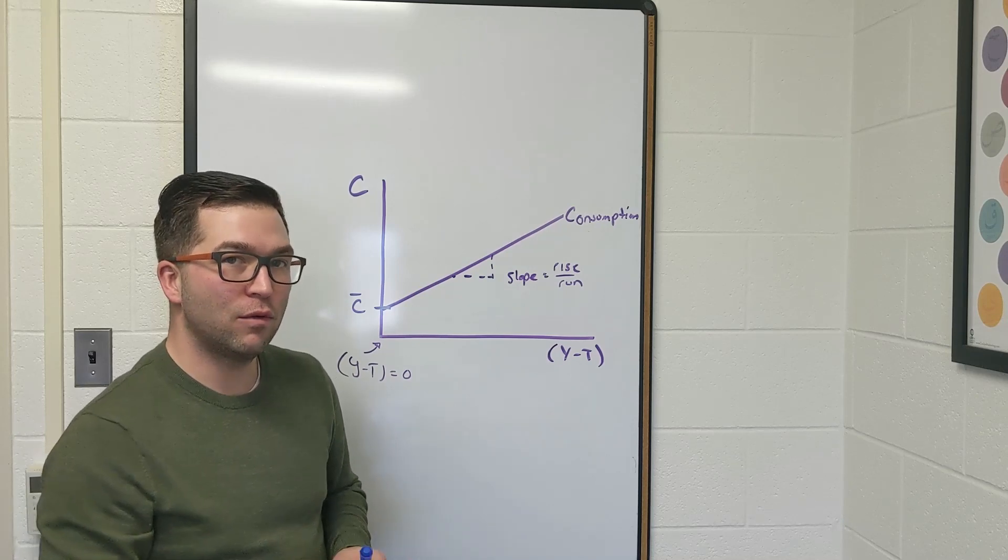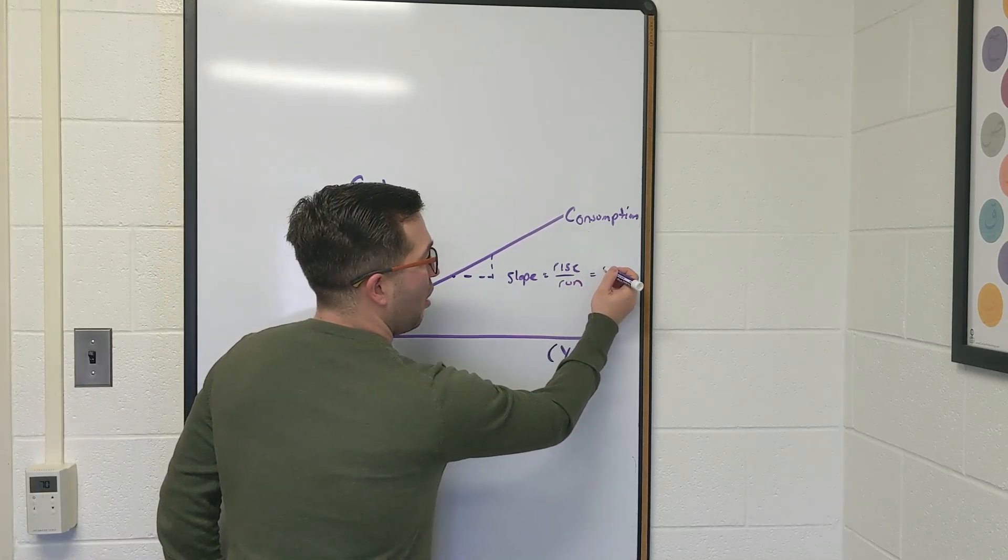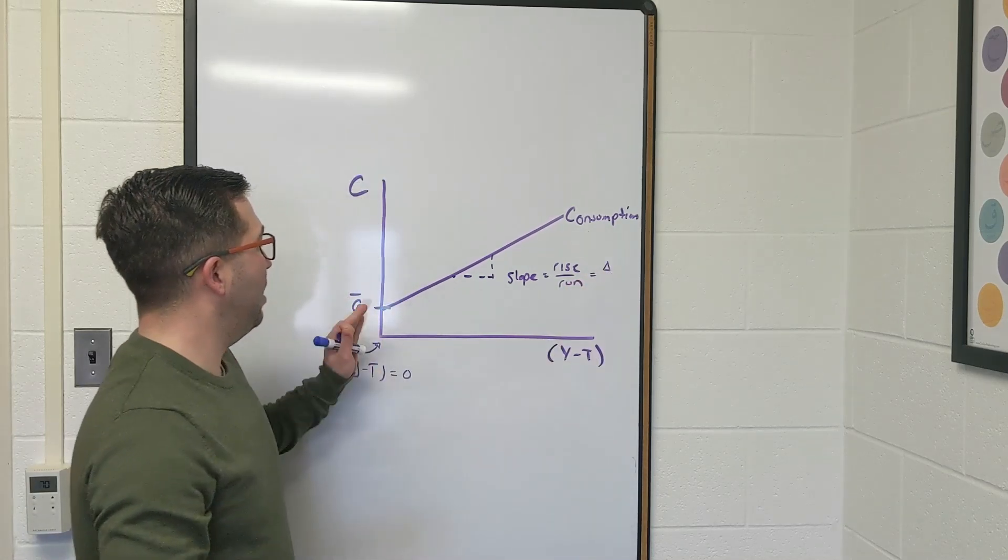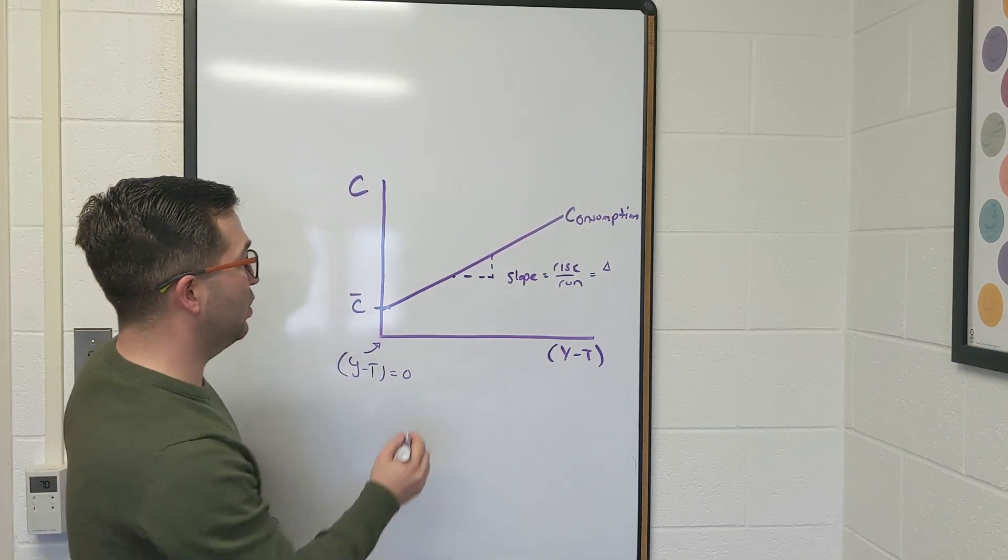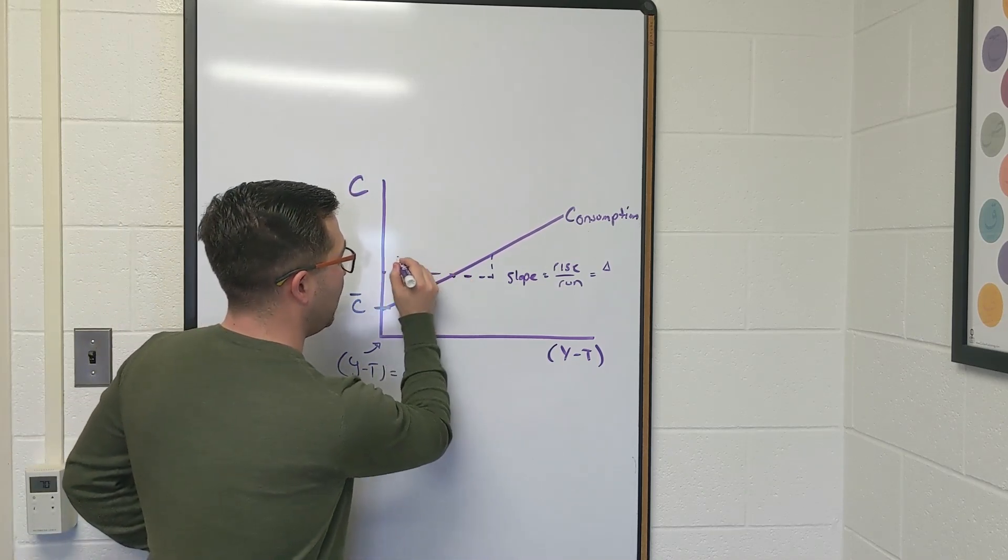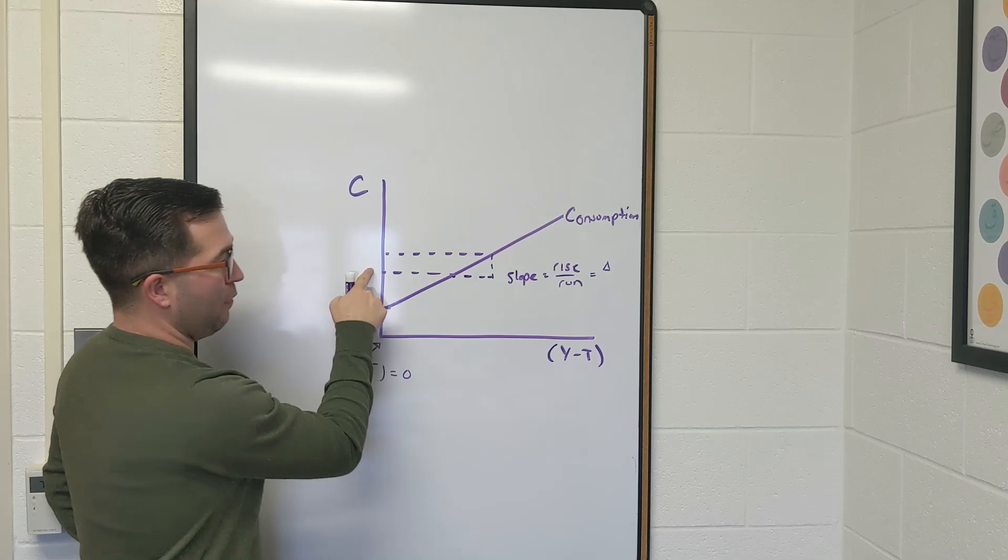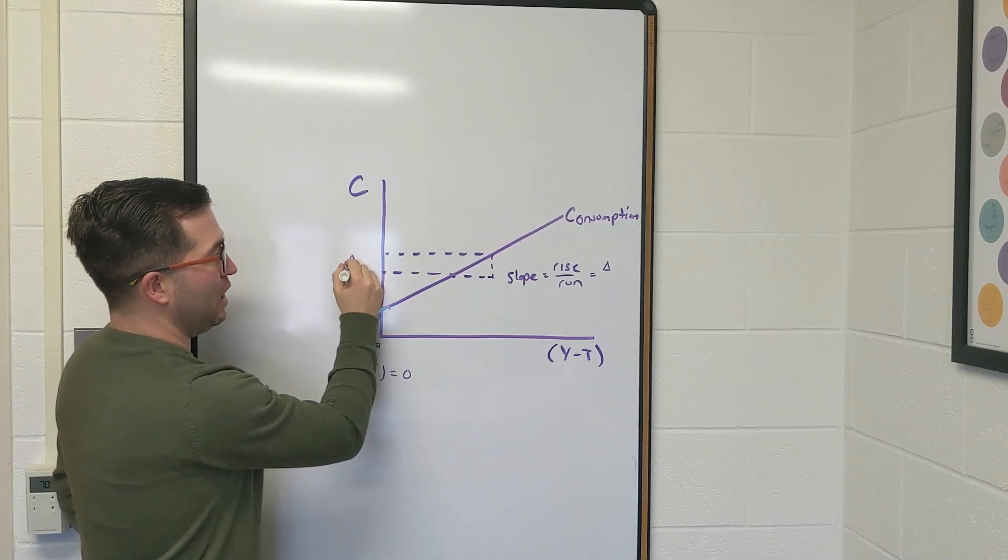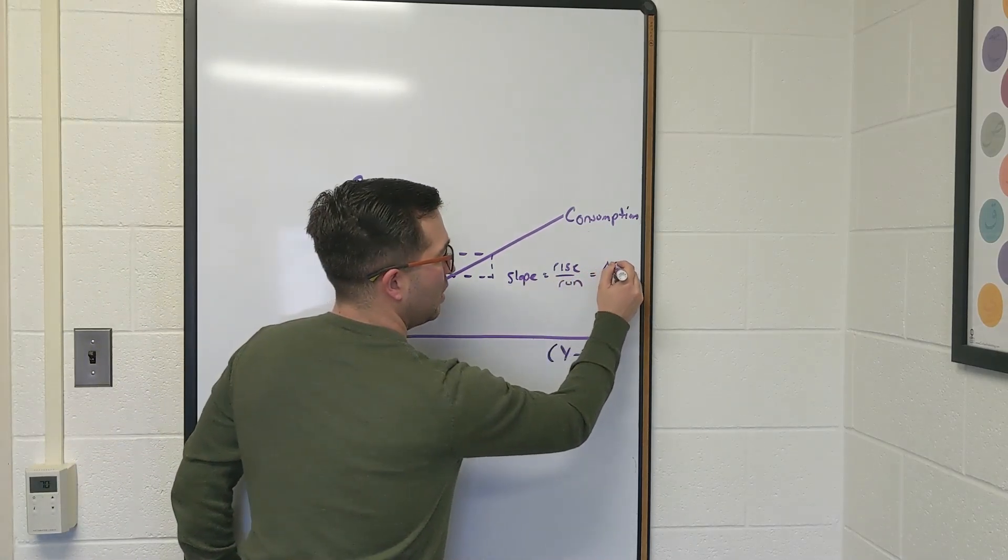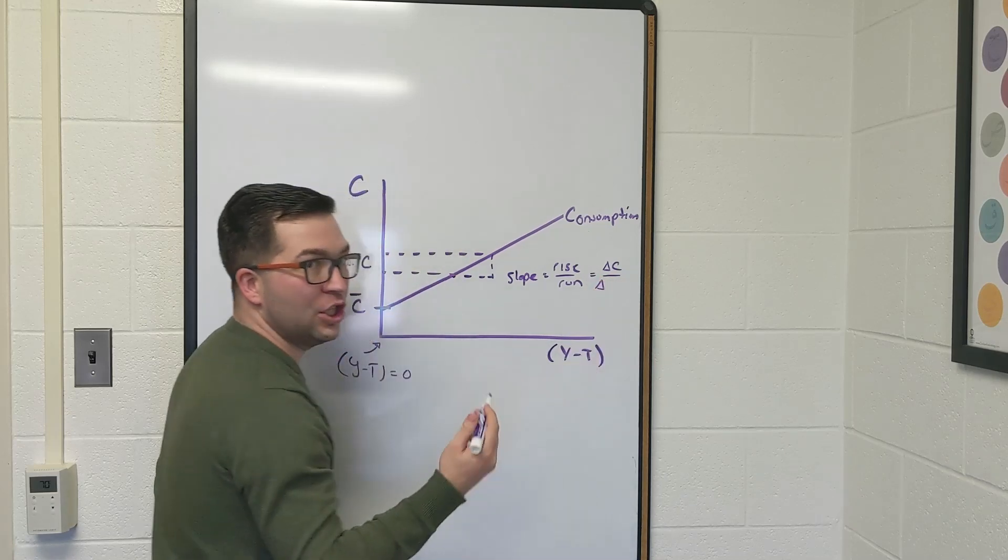What exactly do we mean by rise over run? We mean our change in the vertical axis. So we want to look here. What's our change here? So we're going from one c to another c. So that's my change in consumption divided by another change.